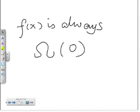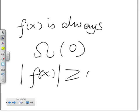A little note: any function, no matter what f(x) is, it is always Big Omega of 0, because no matter what f(x) is, we always have |f(x)| ≥ 0, which makes a lot of sense.